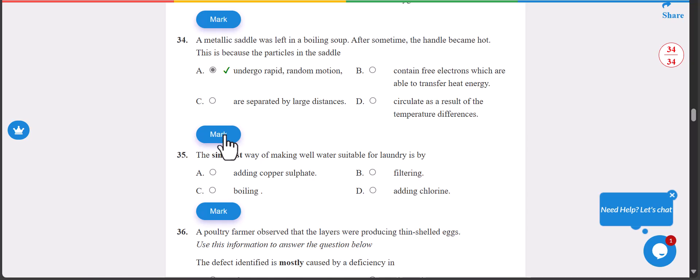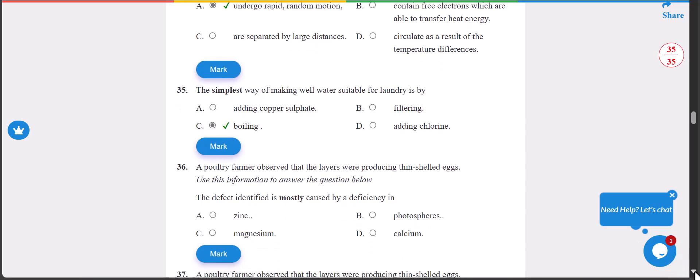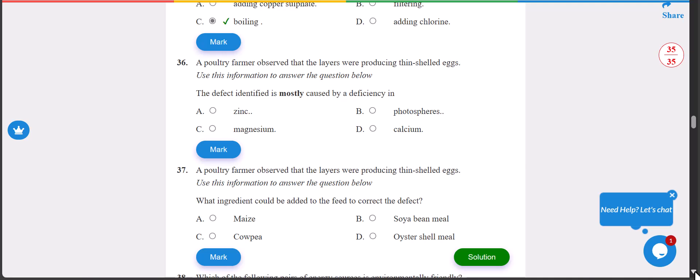Number 35: the simplest way of making well water suitable for laundry is by boiling. Just boiling the water will be suitable for laundry, that is for washing. We're almost done with section A.